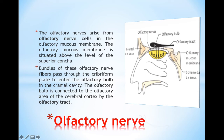These fibers pass to reach the olfactory bulb. The olfactory bulb is connected to the olfactory area of the cerebral cortex by the olfactory tract. We can see the way the sensory nerve travels from the target region to the central nervous system.